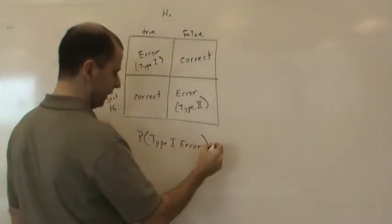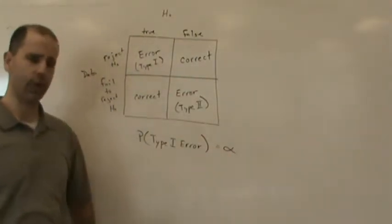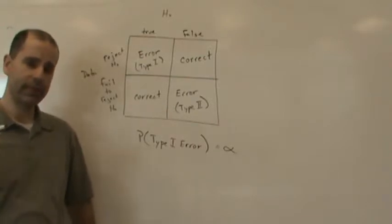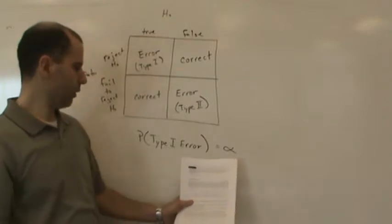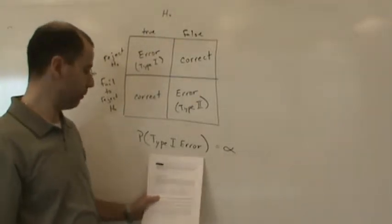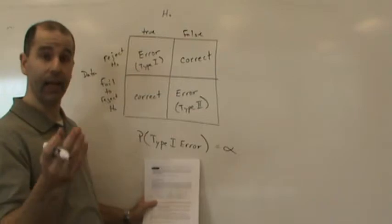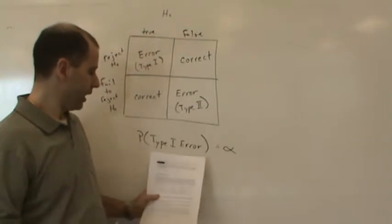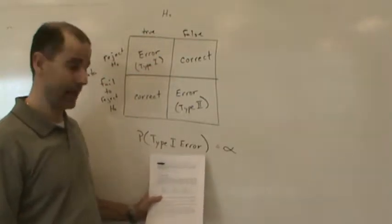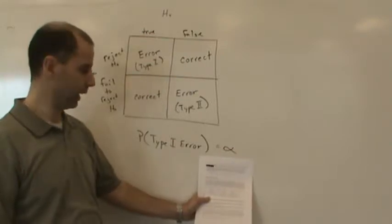That probability is alpha. Remember all those times we talked about alpha as the area in the tails, the significance level, or one minus the confidence level? Well, alpha is actually the probability of making a Type I error. The area in one tail or two tails — depending on whether it's a one-tail or two-tail test — represents this probability.